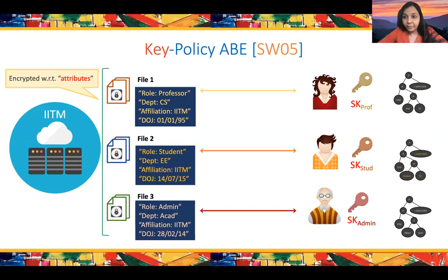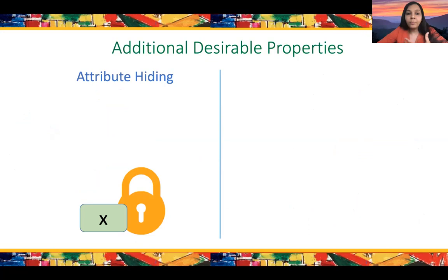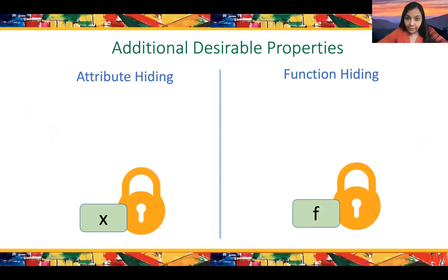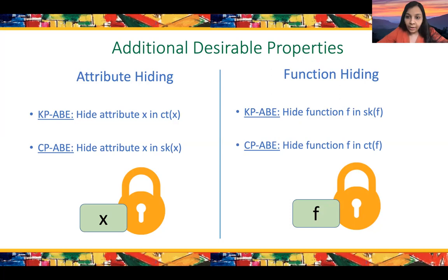There are additional desirable properties you might ask from these constructions. So far, neither the attribute nor the function in the construction are hidden, but you might ask for them to be hidden. These are called attribute hiding and function hiding. The attribute should be hidden, whether in the ciphertext or in the secret key, depending on whether you're in KP or CP-ABE, and analogously for function hiding.